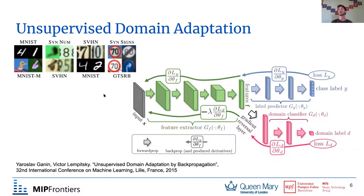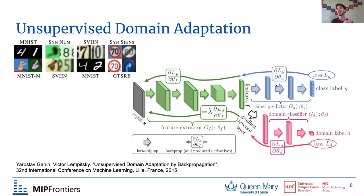The proposed solution involves an architecture with three parts. There's the green part, which is the feature extractor. There's the blue part, which is the classifier that predicts which digit is depicted in the input image. This is a normal network architecture — you pass the input image, compute a loss function, and update the parameters with backpropagation.